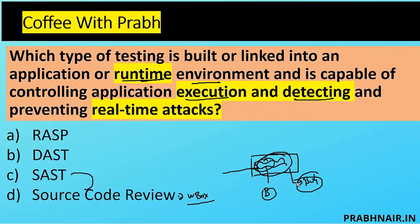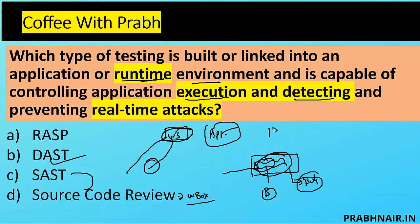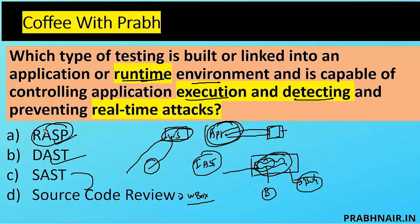In DAST, we identify bugs in a running state — for example, we send queries to a website and identify bugs based on the response. But here we're looking at hooking a plugin into the application in a running state so that whatever bugs are identified, they appear in a particular interface. This way we can proactively identify bugs in real-time, which is called IAST — Interactive Application Security Testing — and it uses the RASP tool.